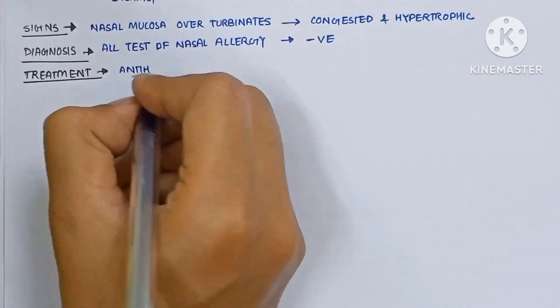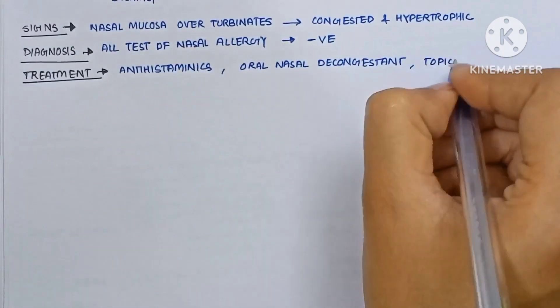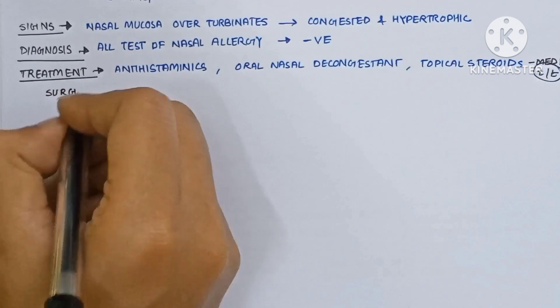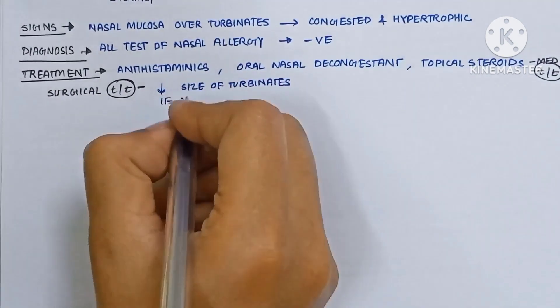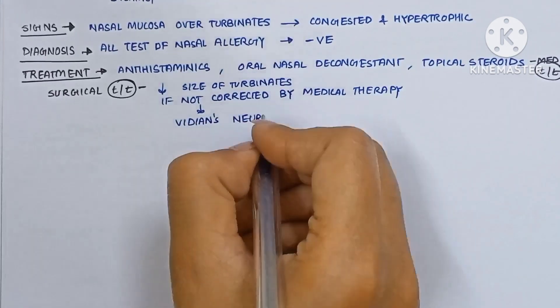The treatment includes antihistaminics, oral nasal decongestants, and topical steroids. These are the medical treatments. Now the surgical treatment: to decrease the size of the turbinates. If not corrected by medical therapy, then vidian's neurectomy can be done.